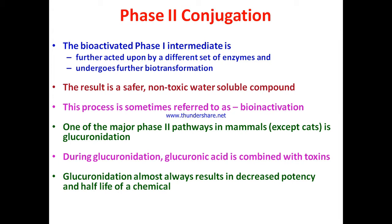Phase two — the main process is conjugation with functional groups, which makes compounds more water-soluble. The bioactivated phase one intermediate is further acted upon by a different set of enzymes and undergoes further biotransformation. The result is a safer, non-toxic, water-soluble compound that can easily be excreted. This process is sometimes referred to as bio-inactivation — phase one was bioactivation, phase two conjugation is bio-inactivation.